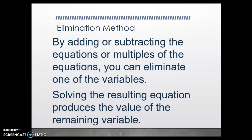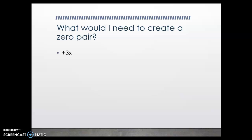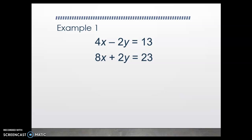Solving the resulting equation after you've eliminated one of the variables produces the value of the remaining variable. To create a zero pair, we're trying to think of the term that's the opposite, so that when we combine those terms, they equal zero. So what would I need to create a zero pair if I had a positive 3x? Hopefully you said negative 3x. What about a negative 4y? A positive 4y. And last but not least, what if I had two terms and I wanted to zero out both — positive 5x minus 2y? Hopefully you said negative 5x plus 2y. When we are doing the elimination method, we need to make sure that we are creating zero pairs. We want to zero out one of our variables.